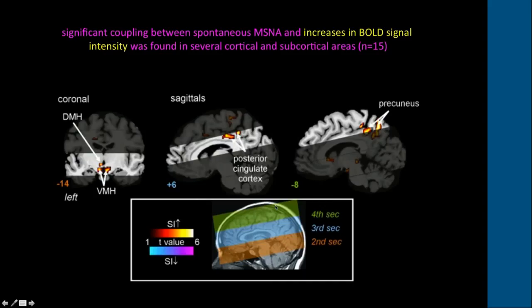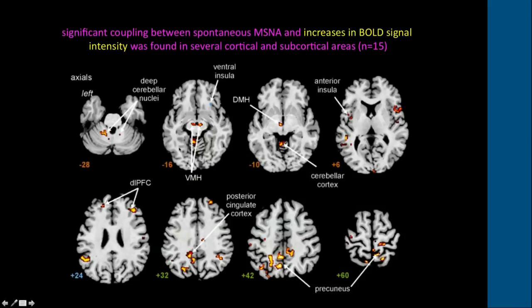Using this approach we can see areas temporarily coupled to bursts of muscle sympathetic nerve activity, including the ventromedial hypothalamus, dorsomedial hypothalamus, cingulate, precuneus, deep cerebellar nuclei, anterior insula, and dorsolateral prefrontal cortex. These areas emerge from an unbiased whole-brain analysis with no region-of-interest constraint, and are therefore likely to be contributing to the generation of muscle sympathetic nerve activity bursts.